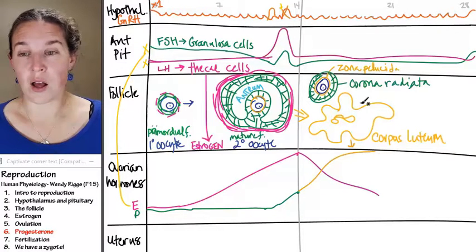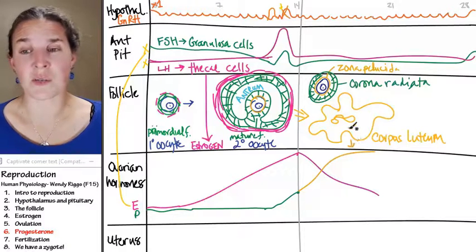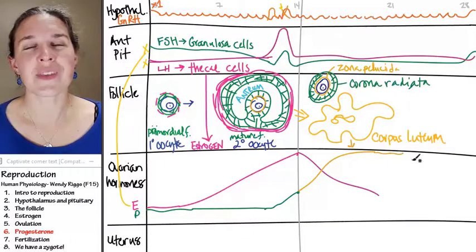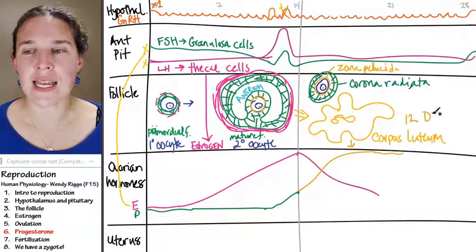All right. That's cool. Ovulation has already happened. The egg is only going to live for 24 hours maximum. So corpus luteum starts producing progesterone. That's cool. Now, here's the fact. Corpus luteum lives for 12 days.